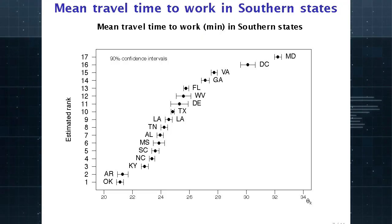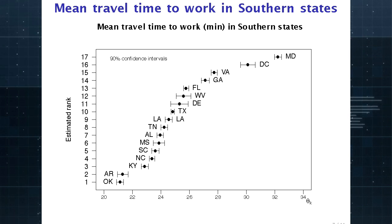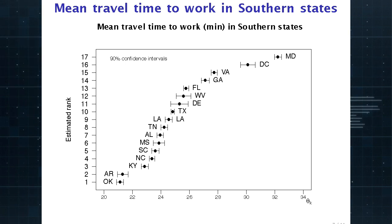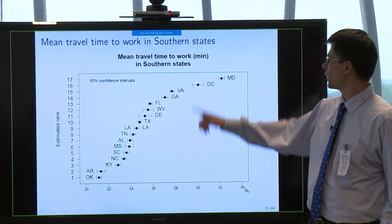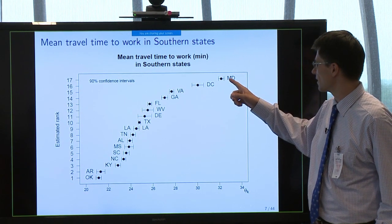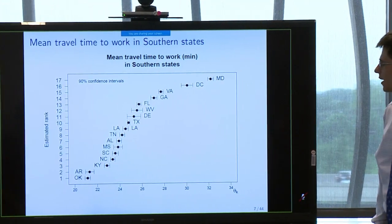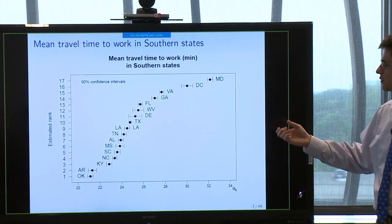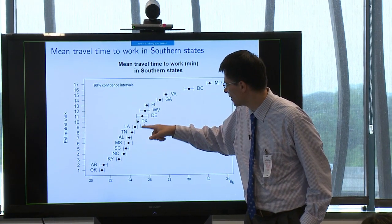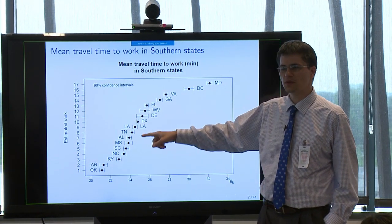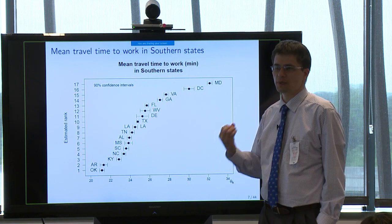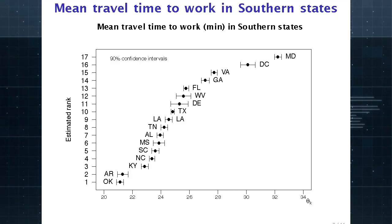Here are the 90% confidence intervals for all 17 states in the southern region from this data set. Oklahoma has the lowest estimated mean travel time to work; Maryland has the highest. Louisiana is here in the middle, ranked around ninth. When we compare these confidence intervals, you might say Louisiana and its neighbor Texas have overlapping intervals, so it's natural to assume we haven't measured their difference precisely enough to say there's a significant difference between them. But that's not necessarily true.